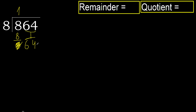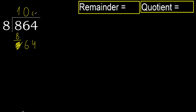2 numbers, therefore complete. Always complete with 0 when there are 2 numbers. 64 — 8 multiplied by 8 is 64, which is not greater.